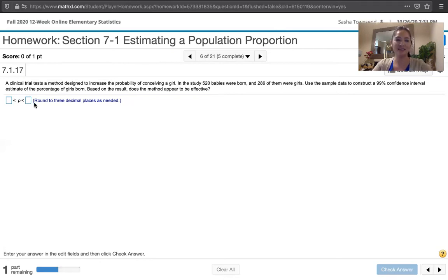They're listing this confidence interval estimate like this. They're saying that P is in between this value and this value, and we're asked to round to three decimal places as needed.